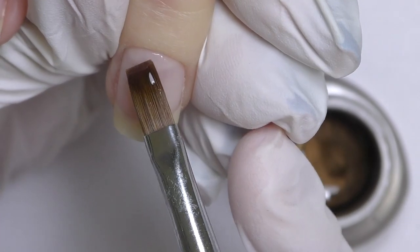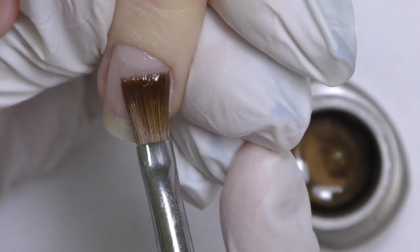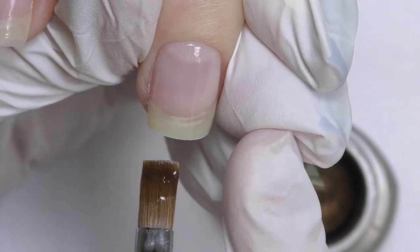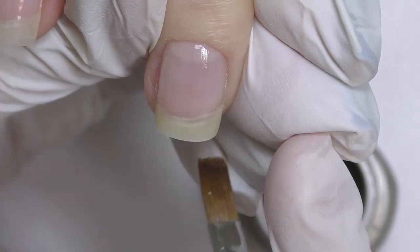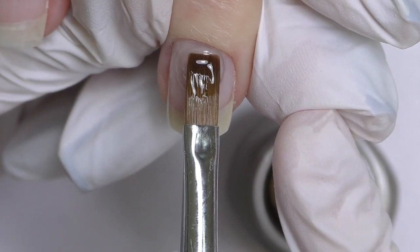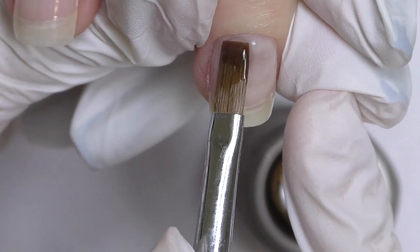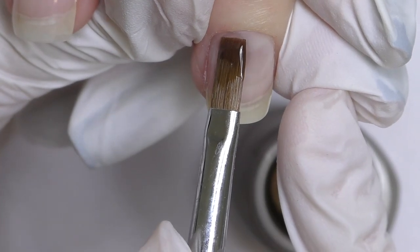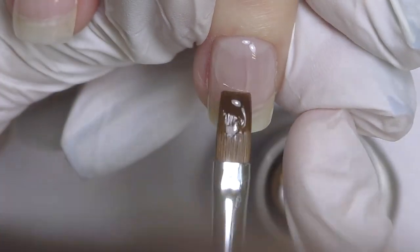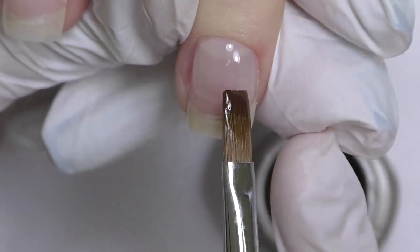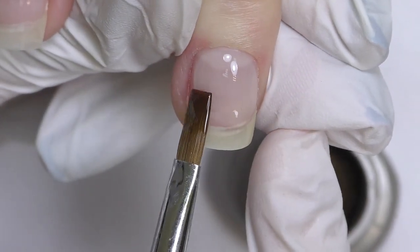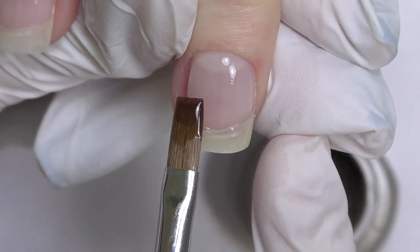So now next step, and this is when we actually do the extensions and build the structure. This gel is called medium gel. First we apply a thin layer all over. And then we are going to build the actual structure, mostly the apex. We already applied another layer of the base coat previously, so this layer should not be too thick as well. But this gel is stronger and actually designed to do the structure, so it is better to make the apex and all the thick parts that we need of the nail using this gel.